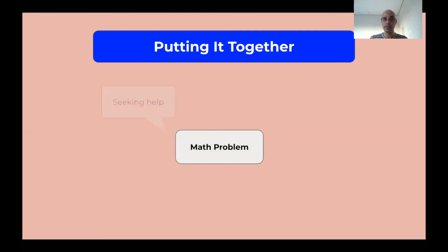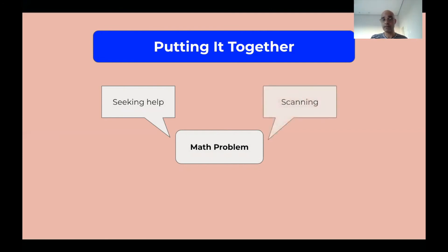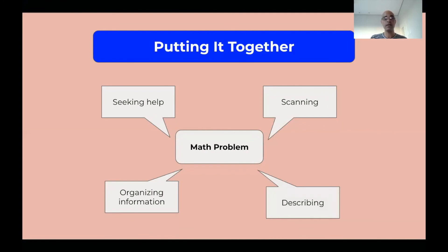Another example relates to students learning how to solve a math problem. If doing it alone, they need to seek help from the teacher; if in groups, they turn to peers first. They need to scan the problem for key information, organize that information, and describe what they find. Those are some examples of what students need in order to solve a math problem.